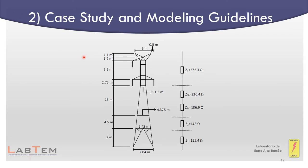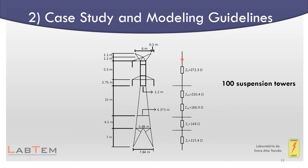In this slide it is possible to observe on the left the suspension tower geometry and the ATP tower model on the right. The tower was divided into five sections, each one represented by four conductors. This was done to consider the variation of the cross-section of the tower with position, which changes the mutual surge impedance as a function of height. 100 of the 220 structures are suspension towers.